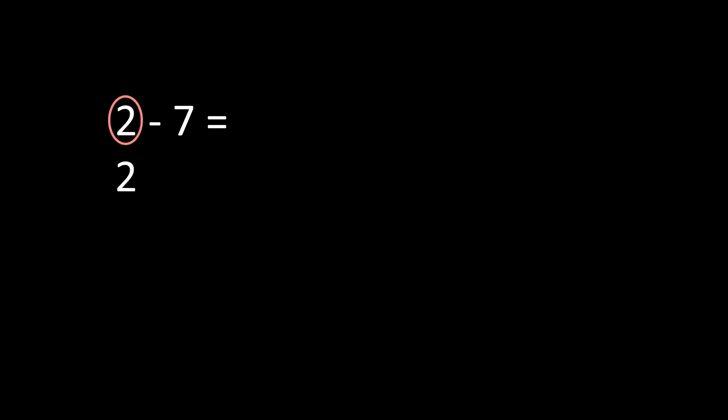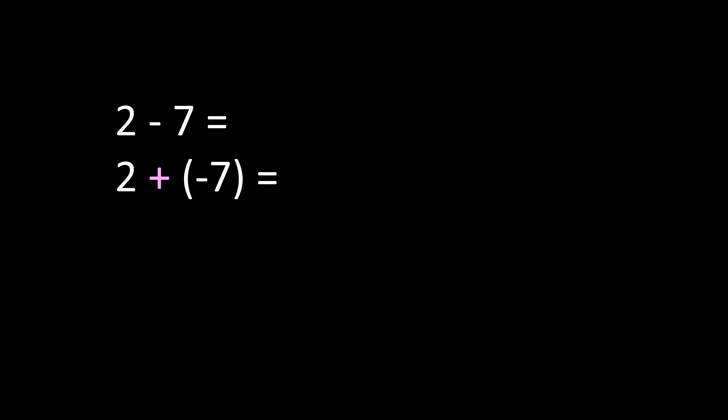In this example we have 2 minus 7, and we're going to use our subtracting integer rules. The 2 remains positive 2. The subtraction sign changes to addition. And our positive 7 we change to a negative 7. Now we have 2 plus negative 7, so we're adding integers with different signs.